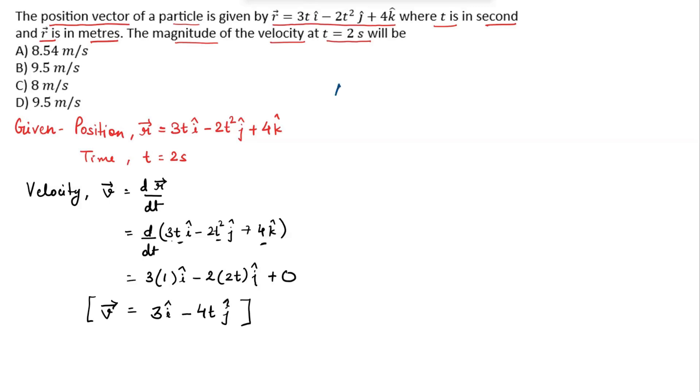Now, according to question at time t equals 2 seconds, we get the velocity as 3 i cap minus 4. In the place of t, we can write 2 seconds j cap. Now, the velocity vector equals 3 i cap minus 4 into 2 is 8 j cap. At time t equals 2 seconds, the velocity is 3 i cap minus 8 j cap.